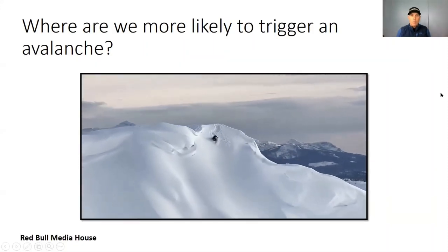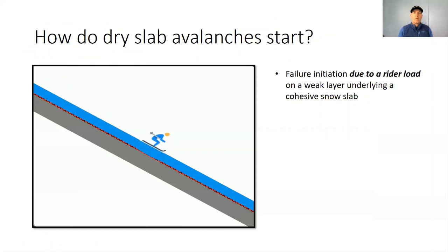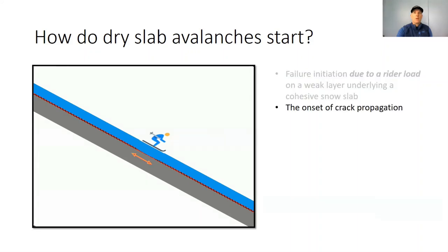We heard from Bruce why the snowpack on steep north, east, and west slopes is more likely to develop a persistent weak layer than the flat part of the convexity. However, there are also mechanical reasons why avalanches are more likely to be triggered from a steep slope. A dry slab avalanche starts when a skier load breaks a weak snowpack layer under the cohesive slab. If the weak layer failure under the skier is large enough, crack propagation along the weak layer starts. We call the minimum failure size that leads to crack propagation the critical cut length. The critical cut length depends on snowpack properties and terrain, and it gets smaller with slope angle.